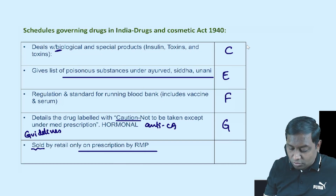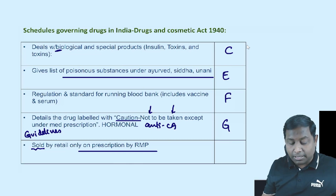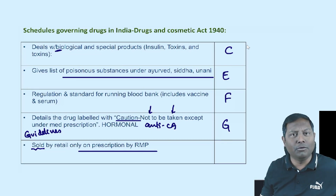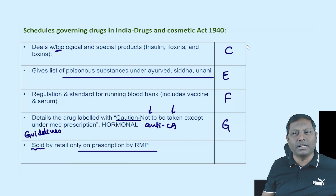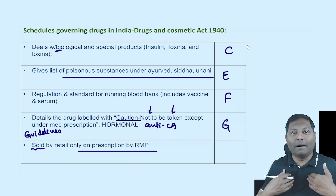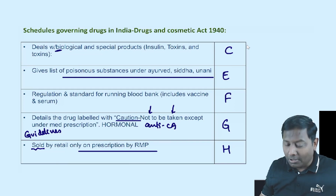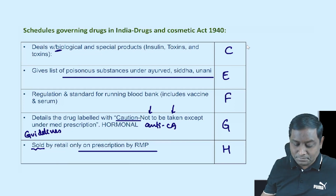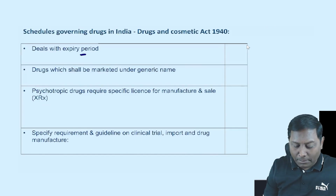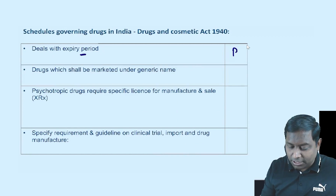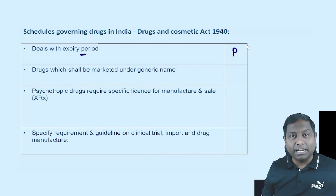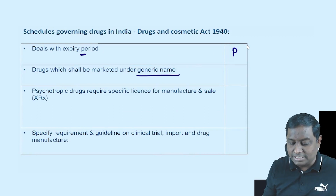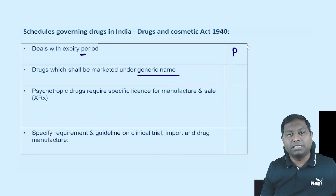Schedule G gives guidelines for drugs sold by retail — here we are talking about the sale of a drug. Schedule H deals with drugs sold only on the prescription of a Registered Medical Practitioner (RMP). Schedule H also deals with the expiry period — very easy to remember.